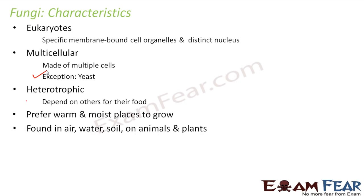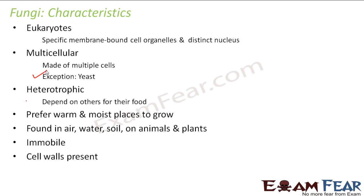Fungi are found in air, water, soil, and on animals and plants — they can be found in almost all kinds of places. They are immobile, meaning they do not move from place to place. This is actually a difference between fungi and slime moulds, which is why slime moulds were not placed under fungi but separately under the Protista kingdom. Cell walls are present in fungi and the cell walls are made up of chitin.